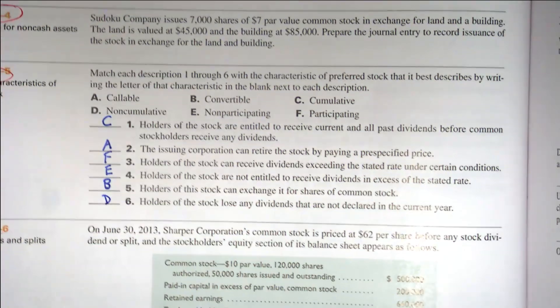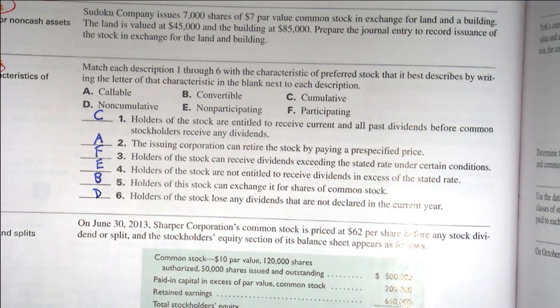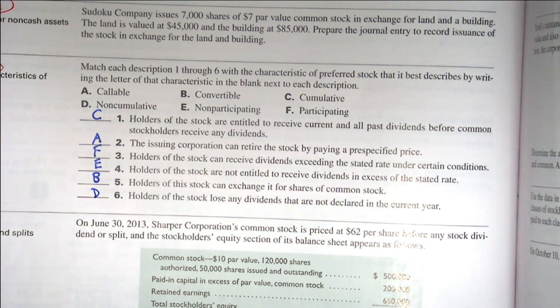Number five: holders of the stock can exchange it for shares of common stock. That is B, convertible - you can convert it into common stock. That would be a nice thing if preferred stock had that feature. Number six: holders of the stock lose any dividends that are not declared in the current year. This is not the usual case, but it is D, non-cumulative. Any questions on any of those? Just be familiar with those terms.